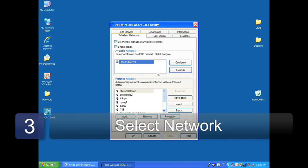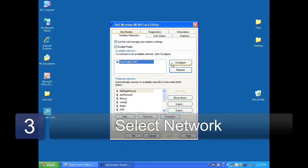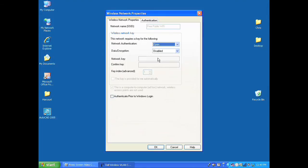Select the network you want to connect to and choose configure. You'll possibly need to enter information on a private network, or on a public network it'll allow you to access without any further information.